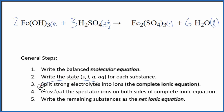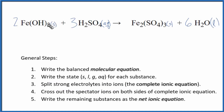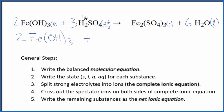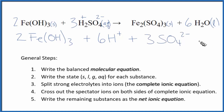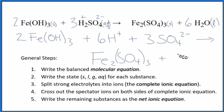Now we can split the strong electrolytes into ions — this is the complete ionic equation. This is a solid here, so we can't split that apart; we're just going to put 2Fe(OH)₃. Sulfuric acid is aqueous and a strong electrolyte, so hydrogen is group one, 1 plus, and the whole sulfate ion is always 2 minus. So I have 3 times 2 of those hydrogen ions and 3 sulfate ions. These are the reactants. We have another solid here which we won't split apart: Fe₂(SO₄)₃. And then we have the 6 water molecules. So this is our complete ionic equation.